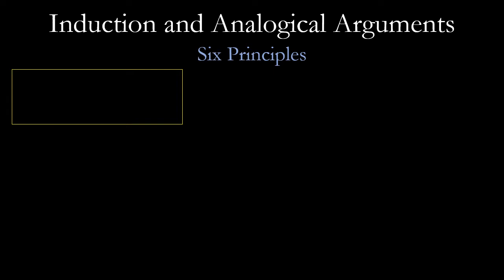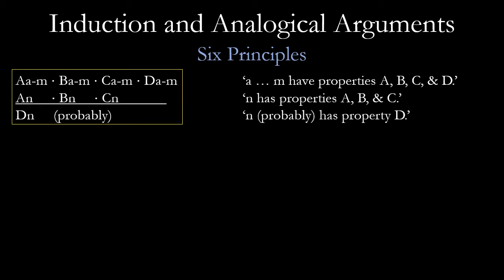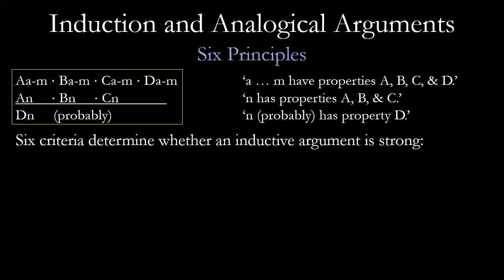There are six principles that make an inductive or analogical argument strong. Using predicate symbolism: samples A through M have qualities A, B, C, and D. Sample N has qualities A, B, and C. Therefore, N probably also has quality D. This is almost like the colloquialism: if it walks like a duck, quacks like a duck, and looks like a duck, then it's probably a duck. Here are the six criteria that determine whether an inductive argument is strong.